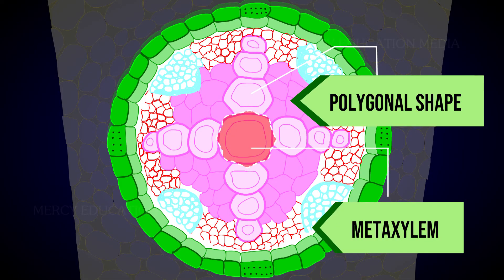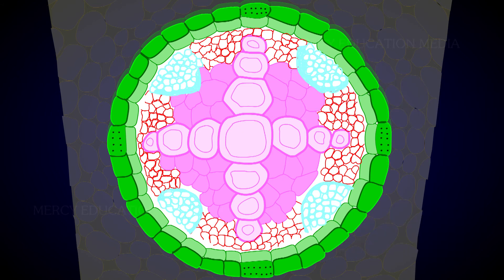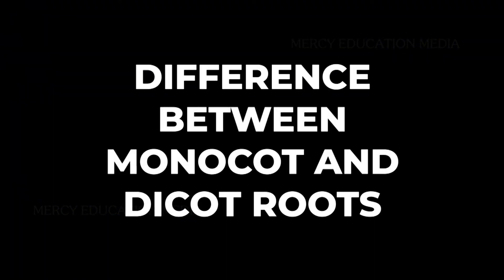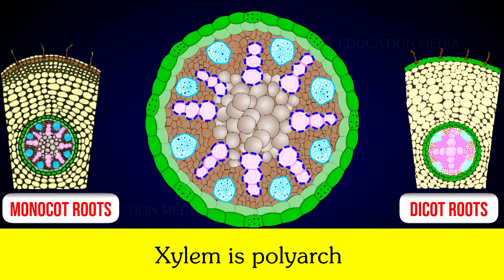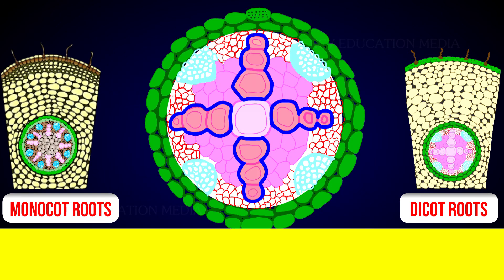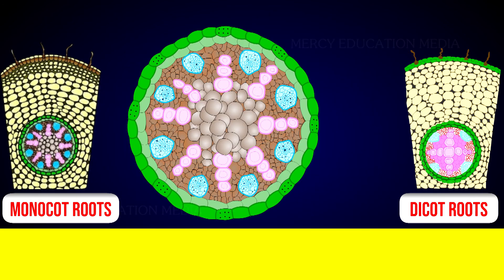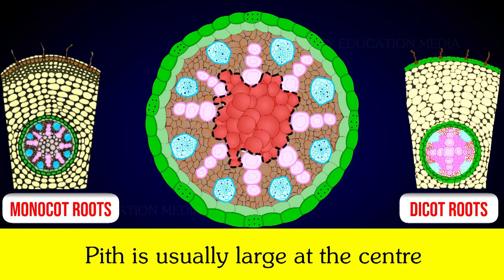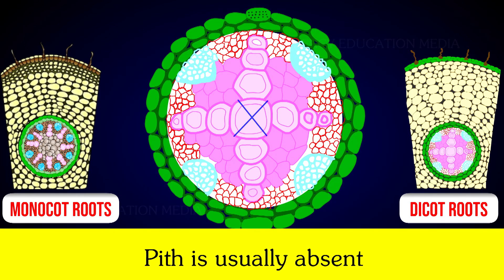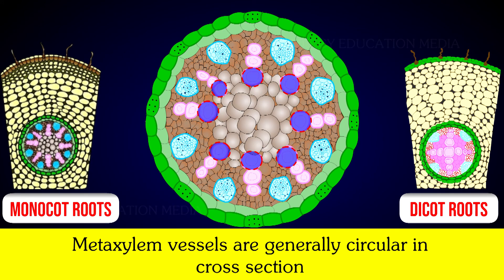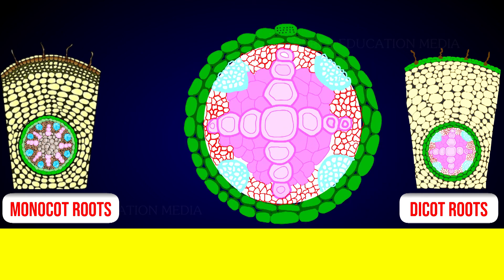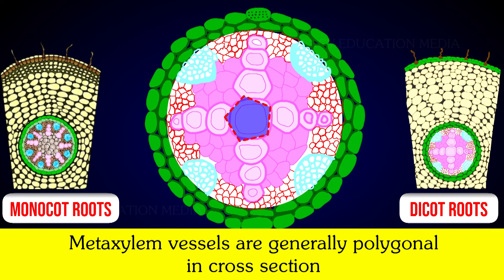Metaxylem vessels are generally polygonal in shape, but in monocot roots they are circular. In monocot roots, xylem is polyarch, whereas in dicot roots the xylem is usually tetrarch. Pith is usually large at the center of monocot roots, but pith is usually absent in dicot roots. The metaxylem vessels are generally circular in cross-section in monocot roots, and generally polygonal in cross-section in dicot roots.